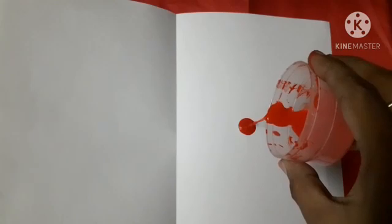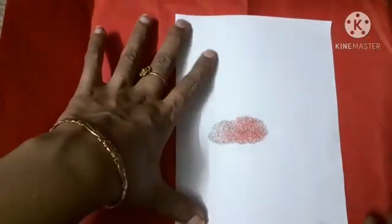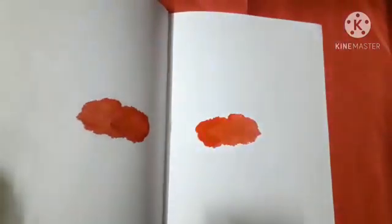Now unfold the paper. Put a block of color on one side of the paper. See. Now fold the paper again and press a little.